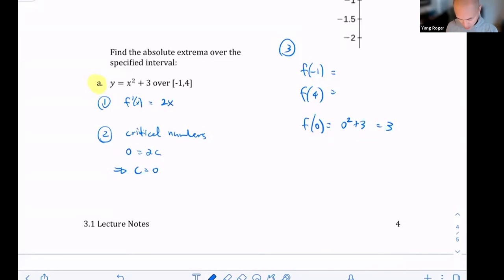Negative one is also easy, right? Negative one squared is one. One plus three is four. And four is also straightforward. We got four squared plus three, four squared is 16, 16 plus three is 19. So this is your absolute max, and this is your absolute min. Is there any questions about that?